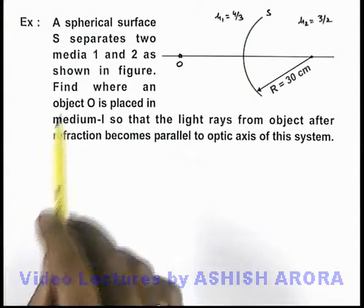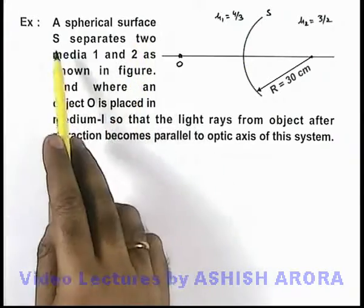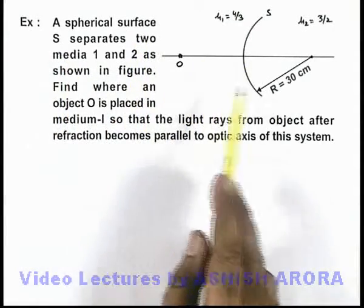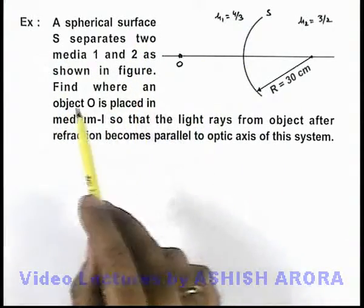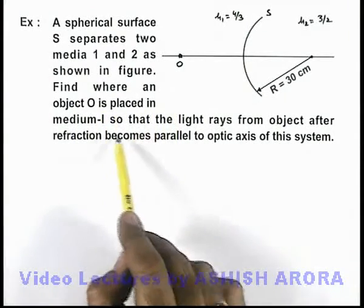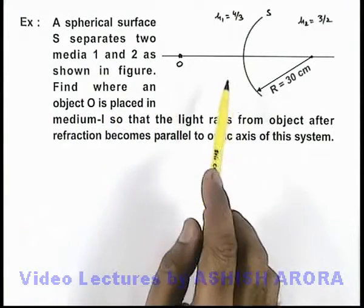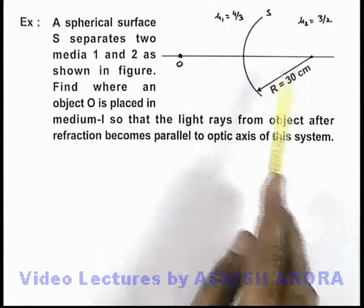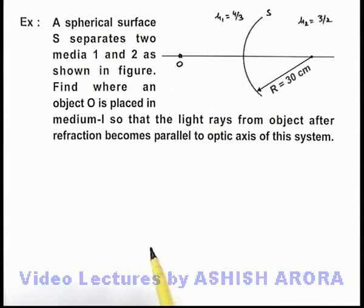In this example, we are given that a spherical surface S separates two media 1 and 2 as shown in the figure. We are required to find where an object O is placed in medium 1 so that the light rays from the object, after refraction, become parallel to the optic axis of the system.